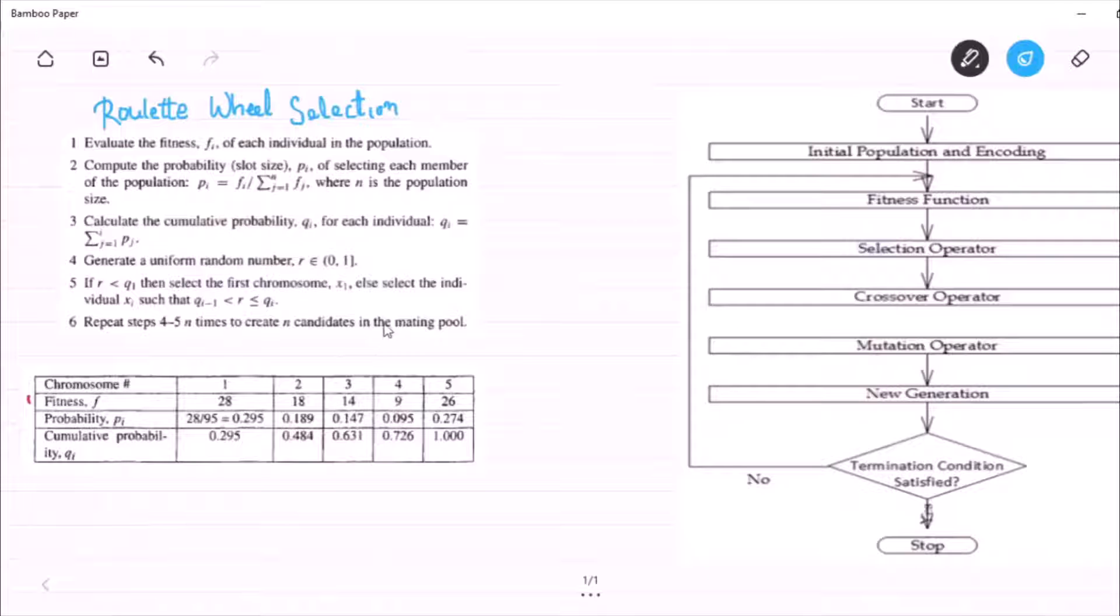Hi guys, in this video we will be talking about the Roulette Wheel Selection Method. But first, look at the genetic algorithm framework. At step 3, we need the selection method.